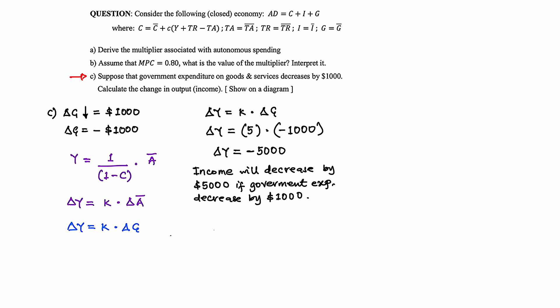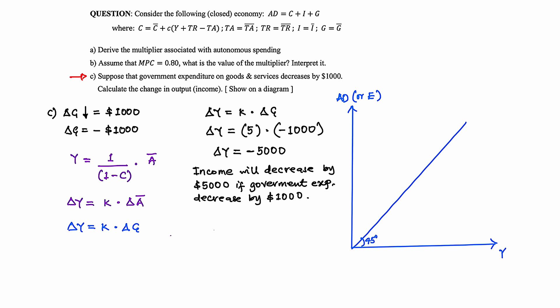Now, how do we represent this on a diagram? We use the Keynesian cross. On the vertical axis we have aggregate demand or total expenditure, and on the horizontal axis we have income Y. We then draw a 45-degree line, which represents all possible equilibrium points where aggregate demand equals the level of income or output in the economy.